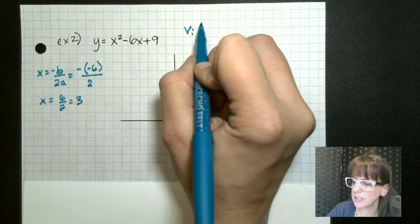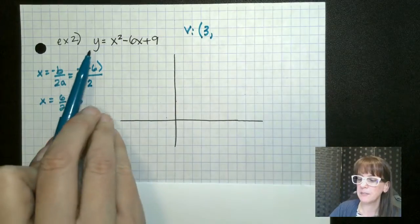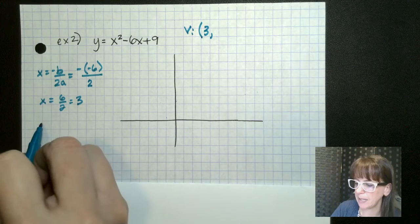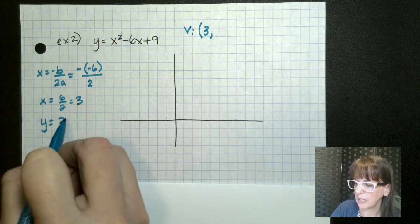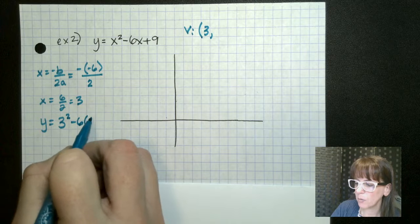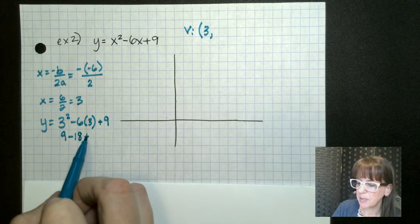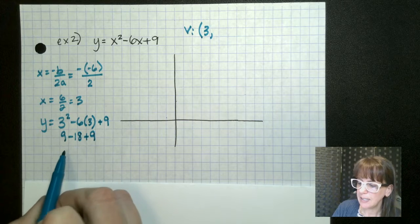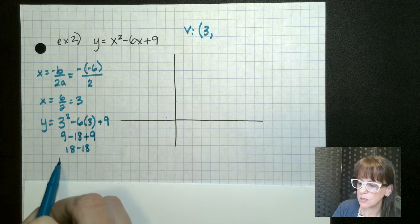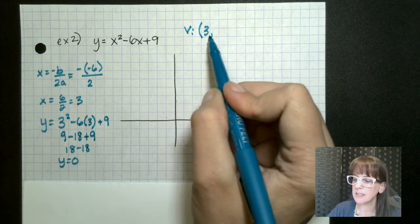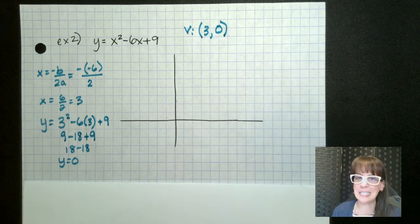So for our vertex, we have three comma. And to figure out our y, we have to plug that back in. Y equals three squared minus six times three plus nine. So nine minus 18 plus nine, nine and nine. So that gives us 18 minus 18. So y equals zero. So when x is three, y is zero.